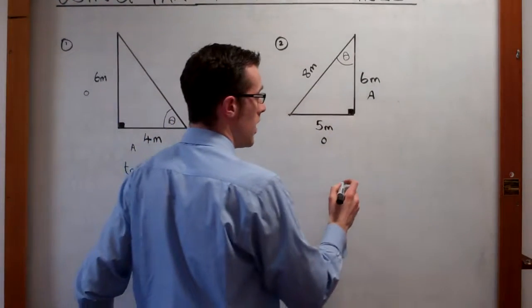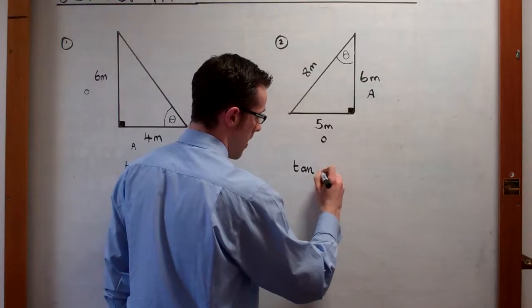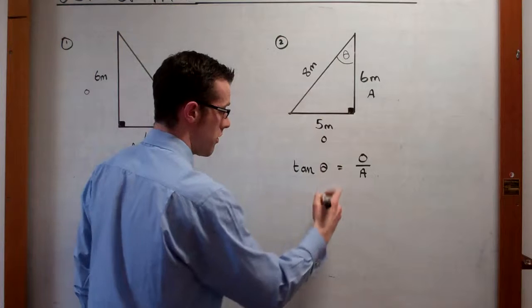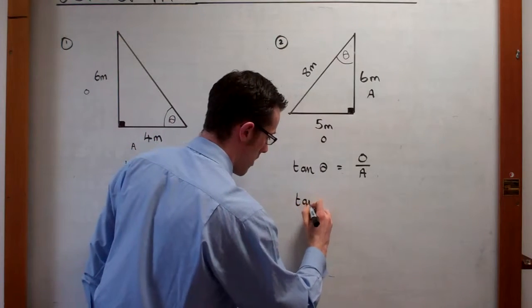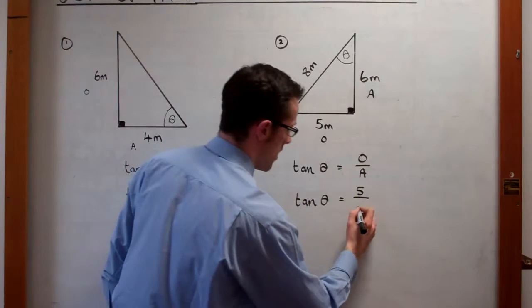So we have tan theta is equal to O over A. O is 5 and A is 6.